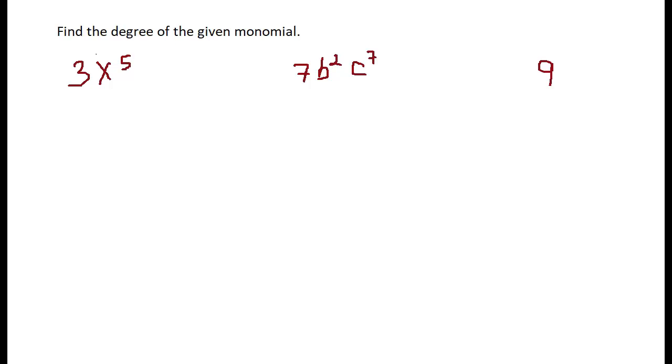So it's a one-termed number in algebra. For example, 3x to the fifth power - one term. Terms, remember, are separated by plus and minus signs, so there are no plus signs or minus signs in these, it's all multiplied together.